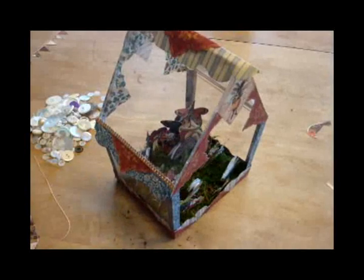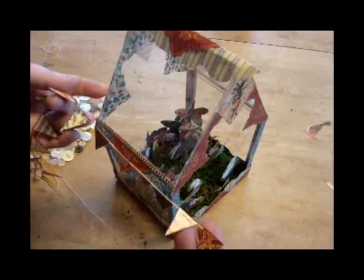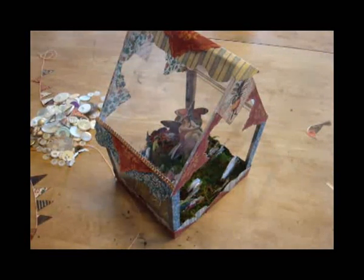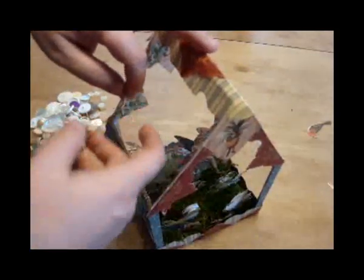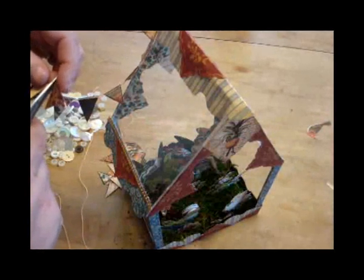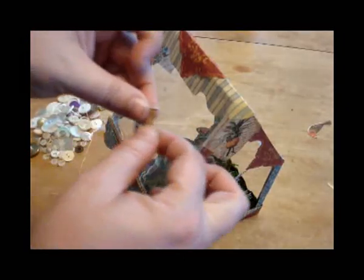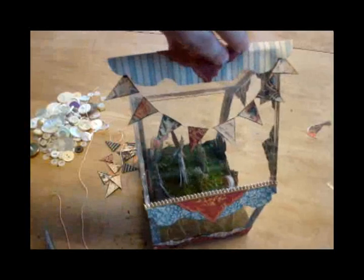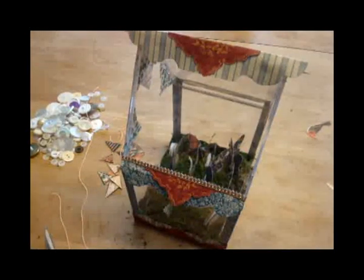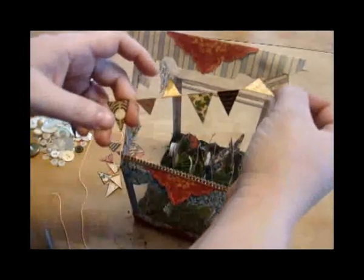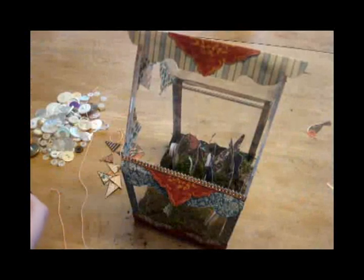And I've made this bunting just from a piece of string and snippets from some beautiful Graphic 45 papers. And I'm going to add this. There we go. Gently, so that it lies nicely in these corners here. It's pretty cute. And of course you don't have to add the bunting if you don't want to. I'm going to cut that little bit of excess string off there. There we go.